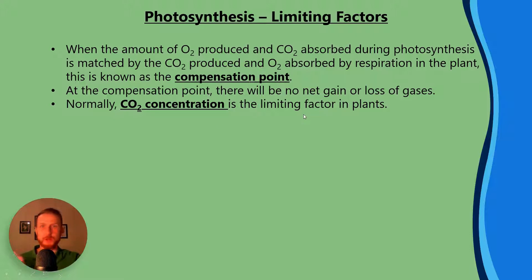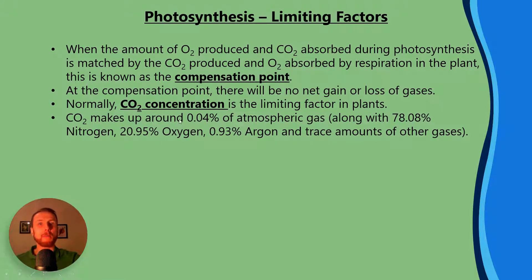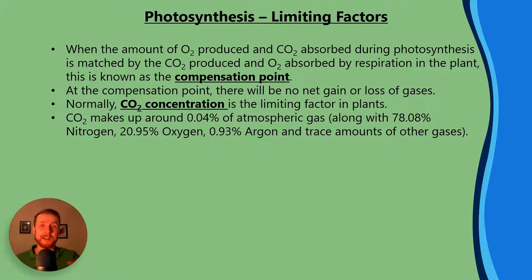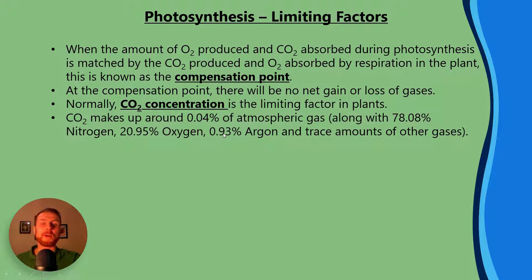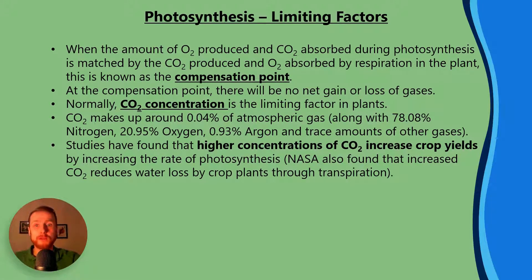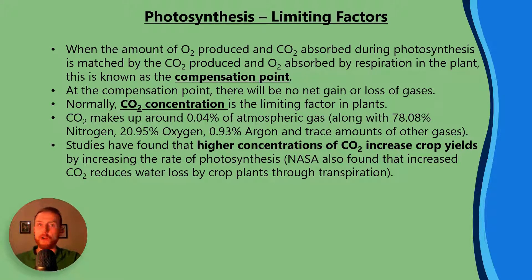CO2 is normally the limiting factor in plants. Carbon dioxide makes up around 0.04% — about 0.041% — of our atmosphere. 78% of what you're breathing is nitrogen, which is a fairly inert gas. Supermarkets fill their salad bags with nitrogen to stop it rotting. 20.95% is oxygen and 0.93% is argon, with trace amounts of other noble gases. Studies have found that higher concentrations of carbon dioxide increase crop yields, which is why some farmers add CO2 to greenhouses growing things such as tomatoes.